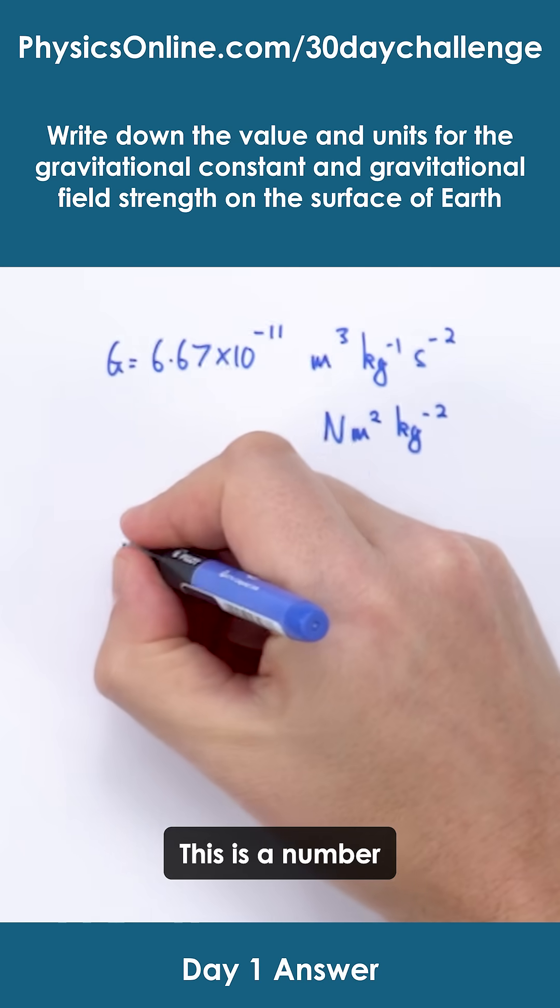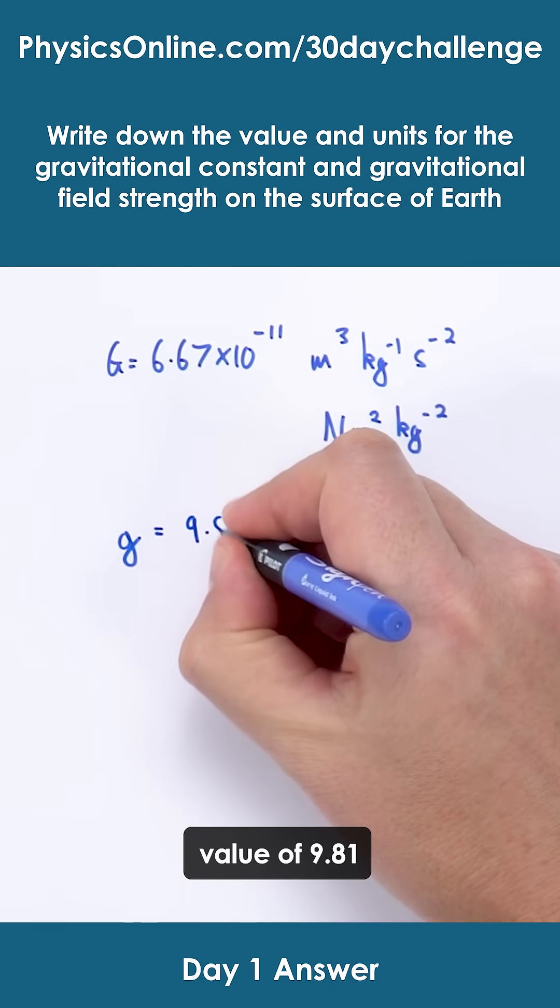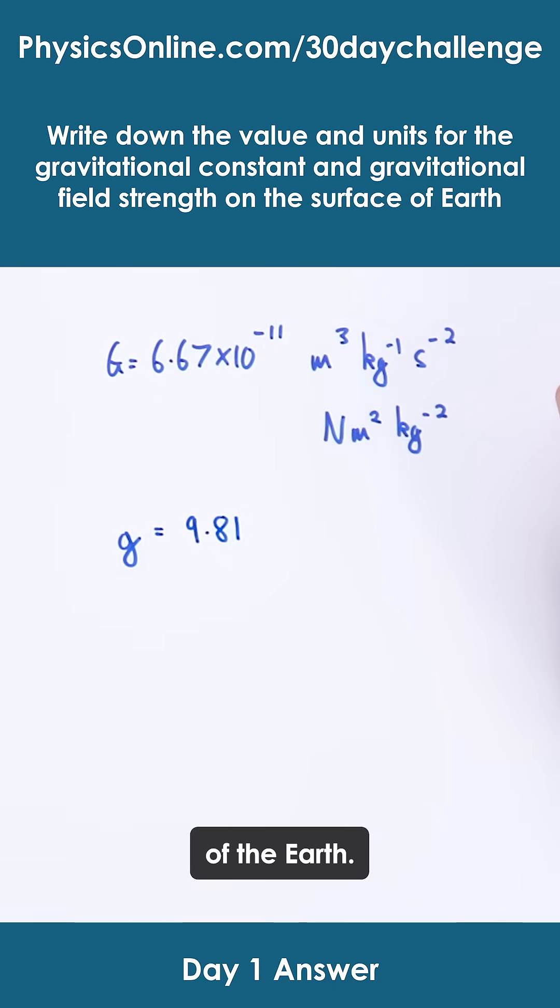Now for the other one, this is a number that you're probably going to be a lot more familiar with. Little g has got a value of 9.81 on the surface of the earth.